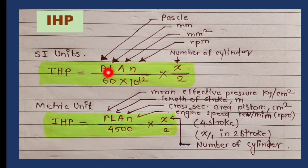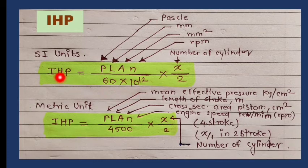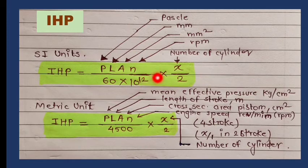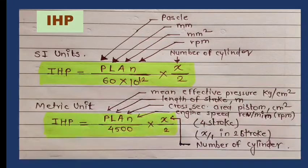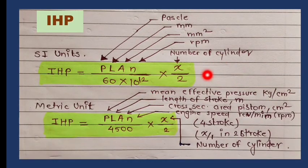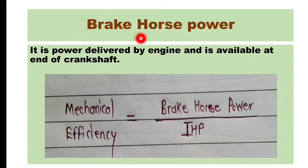Simple exam questions ask: if IHP, stroke length, cross-sectional area of piston, and number of cylinders are given, find mean effective pressure — or compute IHP if all other values are given. There is also one interesting problem we will discuss at the end.